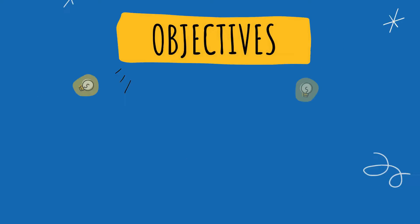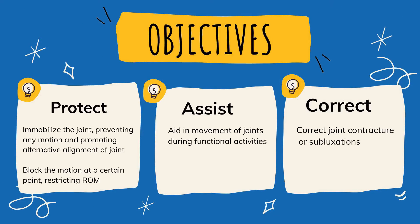The objectives of the use of an orthosis include the ability to protect the joint — that means to immobilize the joint, preventing any motion, and promoting proper alignment of the joint — or to block motion at a certain point, restricting the range of motion. An orthosis could also be used to assist, meaning to aid in movement of joints during functional activities, or it could correct joint contractures or subluxations.